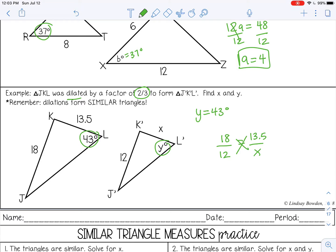I'm going to match 18 with 12 and 13.5 with X. And I'm going to cross multiply here. So 18 times X is 18X, 12 times 13.5 is 162, and then I can divide both sides by 18. X equals 9.